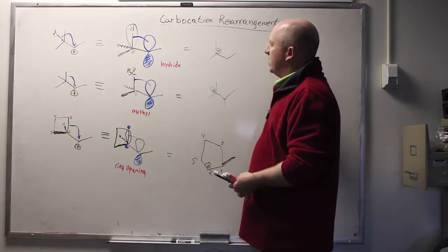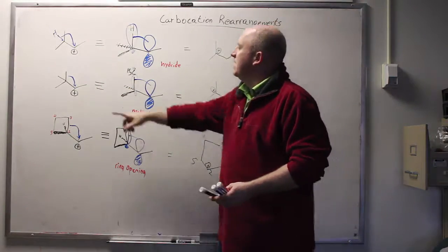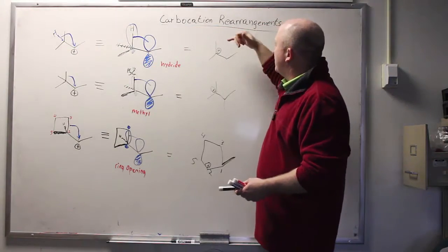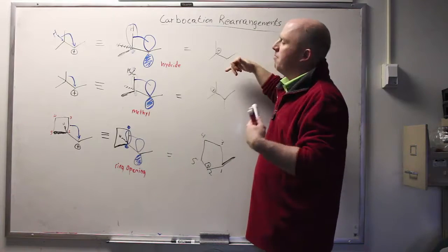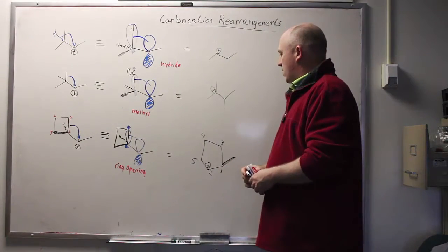And that's carbocation rearrangements in a nutshell. All you're trying to do is find the lowest energy possible state. If a hydride can move to make a tertiary instead of a secondary, it will. If a methyl can accomplish the same thing, it will. If you can relieve ring strain, that too will happen as well.